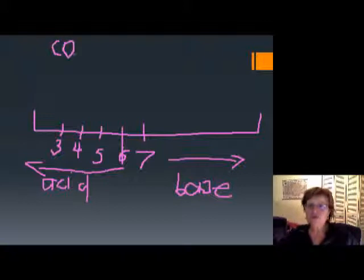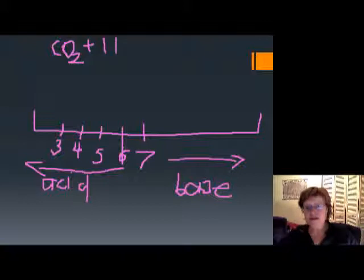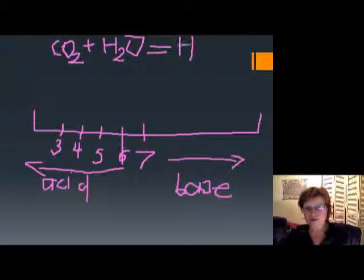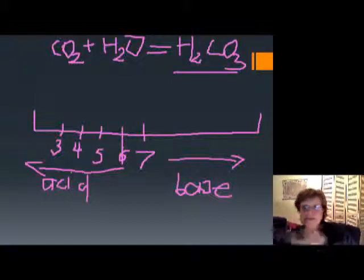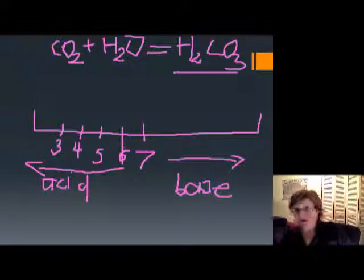What makes rain acidic is CO2. Remember, the atmosphere has CO2 in it. When CO2 reacts with water — and this is a simple balanced chemical equation — CO2 plus H2O produces H2CO3, carbonic acid. Don't forget: this is the naturally occurring acid in the water. We naturally have carbon dioxide in the air from volcanic eruptions and other sources.